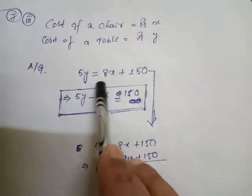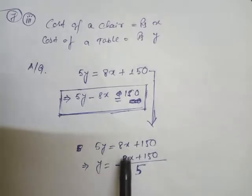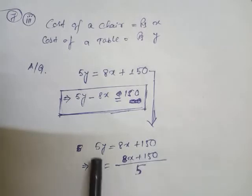I have given one arrow mark here to find the coordinates of the graph. So, 5y equals 8x plus 150. Then y equals 8x plus 150 divided by 5.